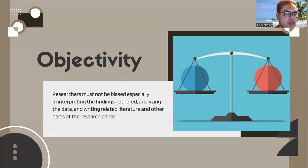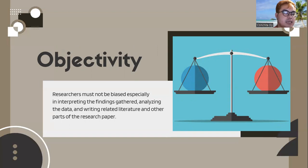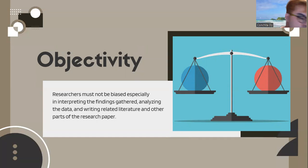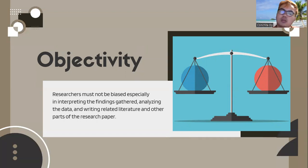When we say objectivity, researchers must be fair with all respondents. Researchers must not be biased, especially in interpreting the findings gathered, analyzing the data, and writing related research and literature and other parts of the research paper. The comments must be neutral, especially when writing the review of related literature and the findings. Avoid making subjective comments such as 'very good,' 'beautiful,' 'ugly,' or 'clean.'